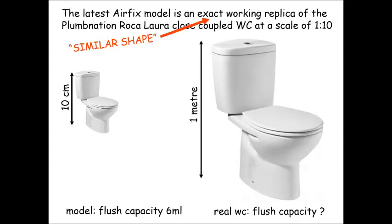The question tells us that the shapes are mathematically similar by calling one an exact replica of the other at a scale of 1 to 10. That's the linear scale factor. So if you're measuring anything on the model, it will be 10 times longer on the real toilet. We have to find out what the flush capacity will be on the real loo. That's volume.